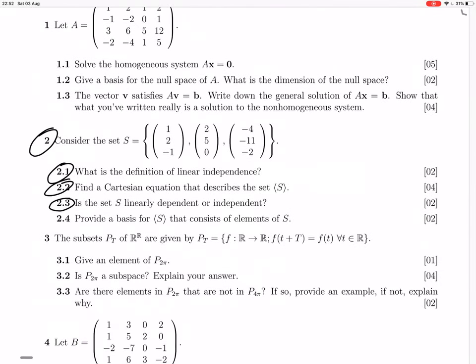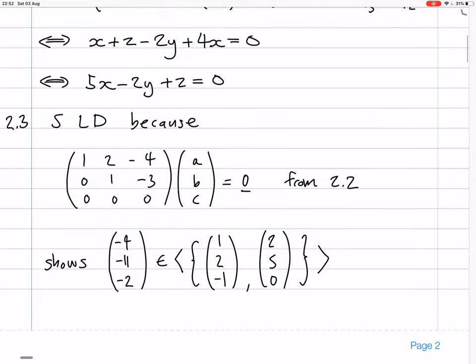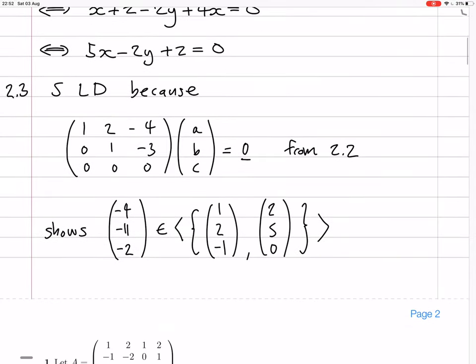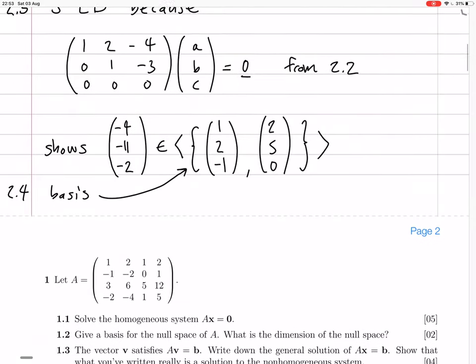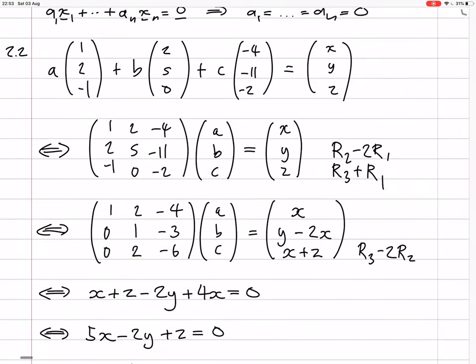Now, 2.4 was provide a basis of S, a basis of elements of S. Okay, so it's those two vectors. So let me just say that 2.4 is that this thing is a basis, those two vectors. That's all. Thank you.